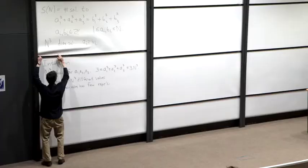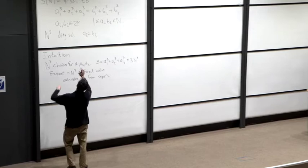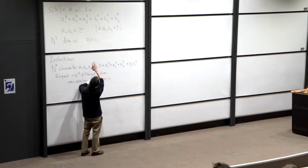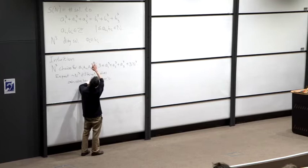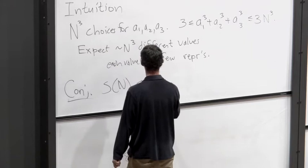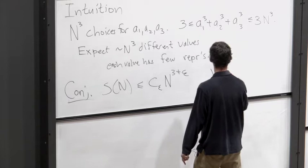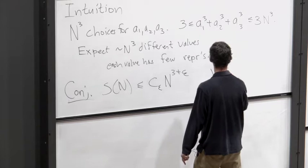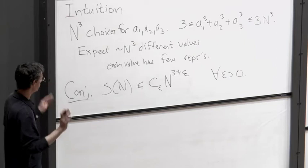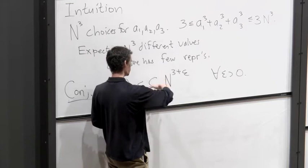If you believe that each value occurs few times, there are n³ choices for the left-hand side, and for each choice there are only a few choices for the right-hand side. So there should be about n³ solutions total. Here's a more formal conjecture: S(n) is at most C_ε · n^(3+ε) for every ε > 0. It's plausible that it's just bounded by a constant times n³, but even this weaker conjecture is far beyond what we can currently prove.